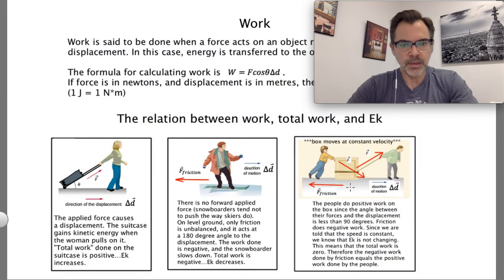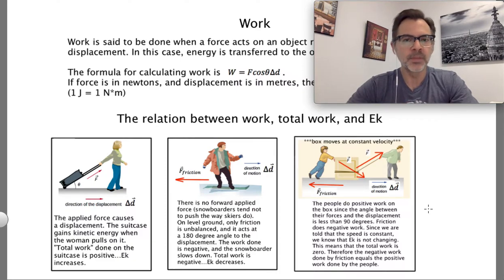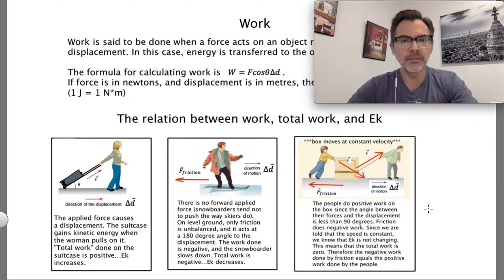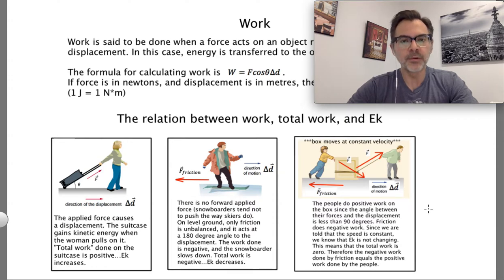We're starting with a review of grade 11 physics, where you learned about the concept of work — the idea that if a force is applied on an object, and at least part of that force is in the direction of the displacement, then we have a transfer of energy, and that's what we call work. When we do work on an object, any number of things can happen: it could speed up, slow down, or move at a constant velocity. The concept of work gives us another way of calculating what's going to happen to an object, and in some situations it's a lot easier than using forces and kinematics.